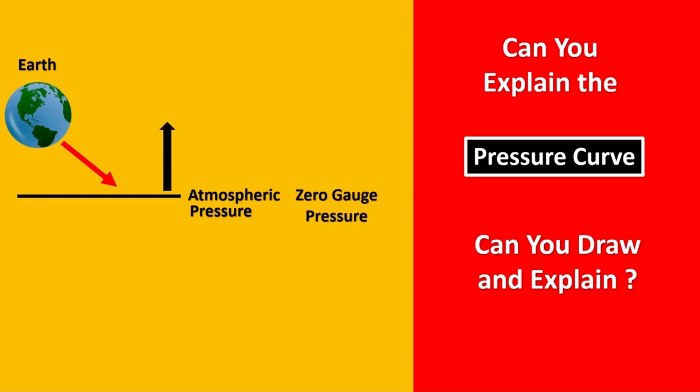Now anything above it that you're measuring is in terms of gauge pressure. For example, let's take this point as one bar gauge. It is measuring with respect to gauge pressure.